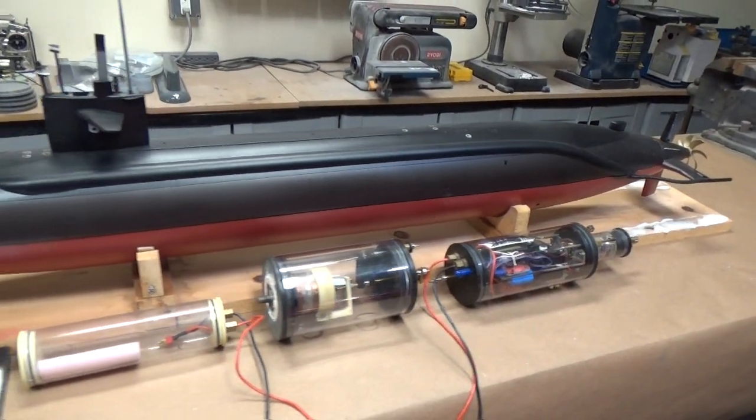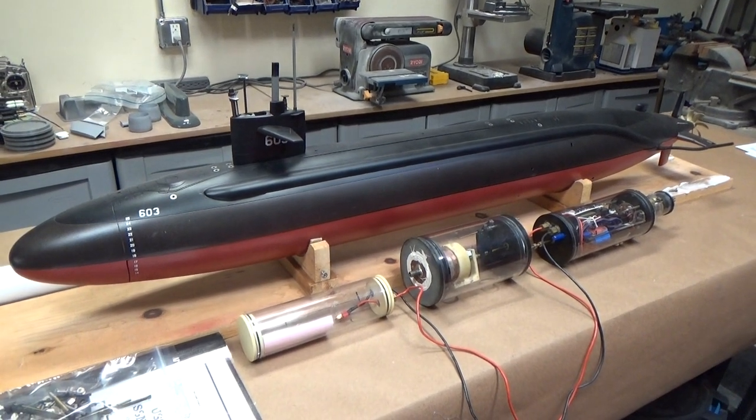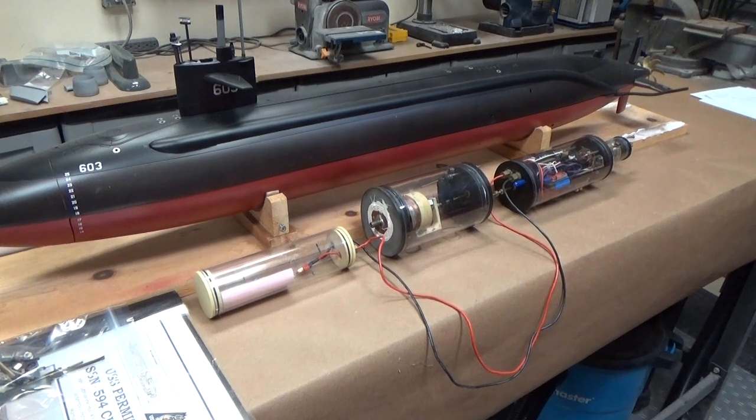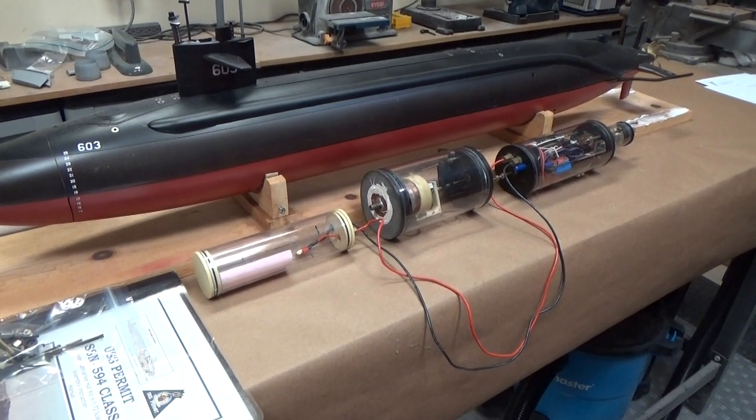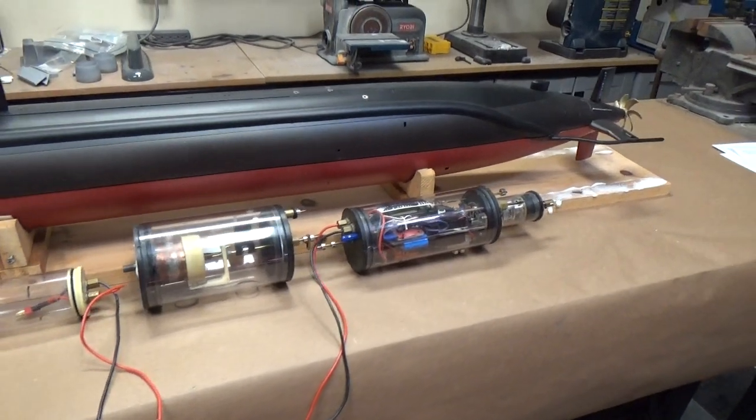He let me know basically these are just rattle can paints that he got from the local hardware store. He also fabricated his own watertight cylinder arrangement and it's pretty unique. Actually, I kind of like it.